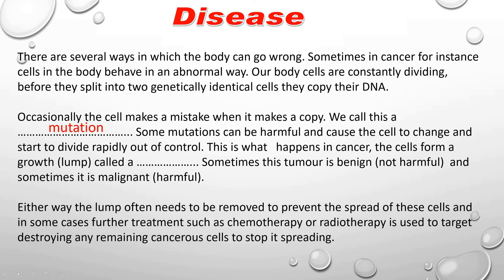The cells form a growth or a lump called a tumour. Sometimes this tumour is what we describe as benign — in other words, it's not harmful. And sometimes it is malignant — it is harmful. The lump often needs to be removed to prevent the spread of these cells. In some cases, further treatment like chemotherapy or radiotherapy is used to destroy any remaining cancerous cells to stop it spreading. Or if it's a benign tumour, it may just need removing because it's in an awkward place, putting pressure on a blood vessel or a nerve, or affecting things like the shape of the eyeball — so that vision is sometimes distorted. So even though it's not harmful as a tumour itself, it's harmful because of its position.